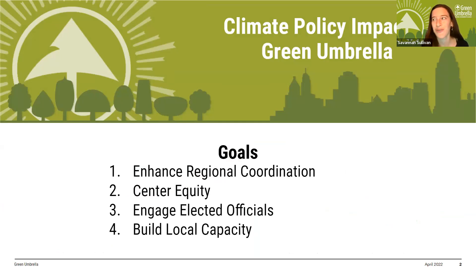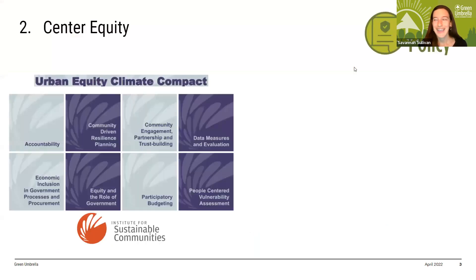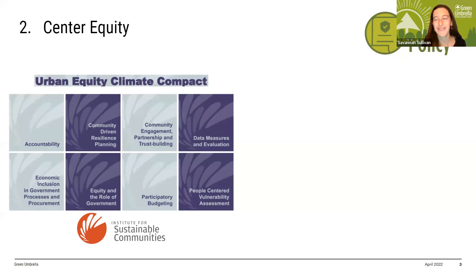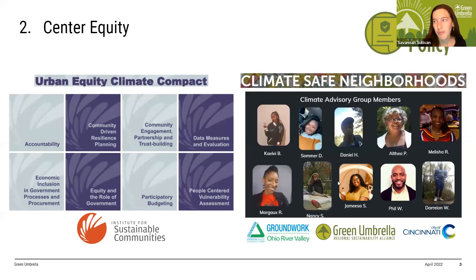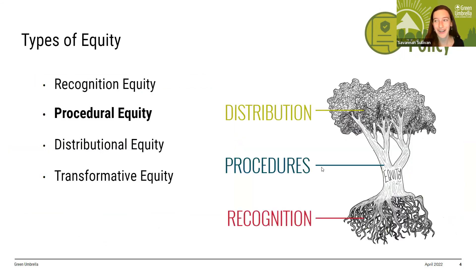We have four primary goals for this work in our 10-county region, and today we'll be focusing on goal number two: centering equity in planning processes. We are currently working through two sets of programming — one through our participation in the Urban Equity Climate Compact hosted by the Institute for Sustainable Communities, and the second through designing and supporting community engagement processes for Greater Cincinnati. We've been part of the Climate Safe Neighborhoods Partnership to kickstart the work in the region. First, I wanted to introduce the types of equity and some principles connected to equitable community engagement.